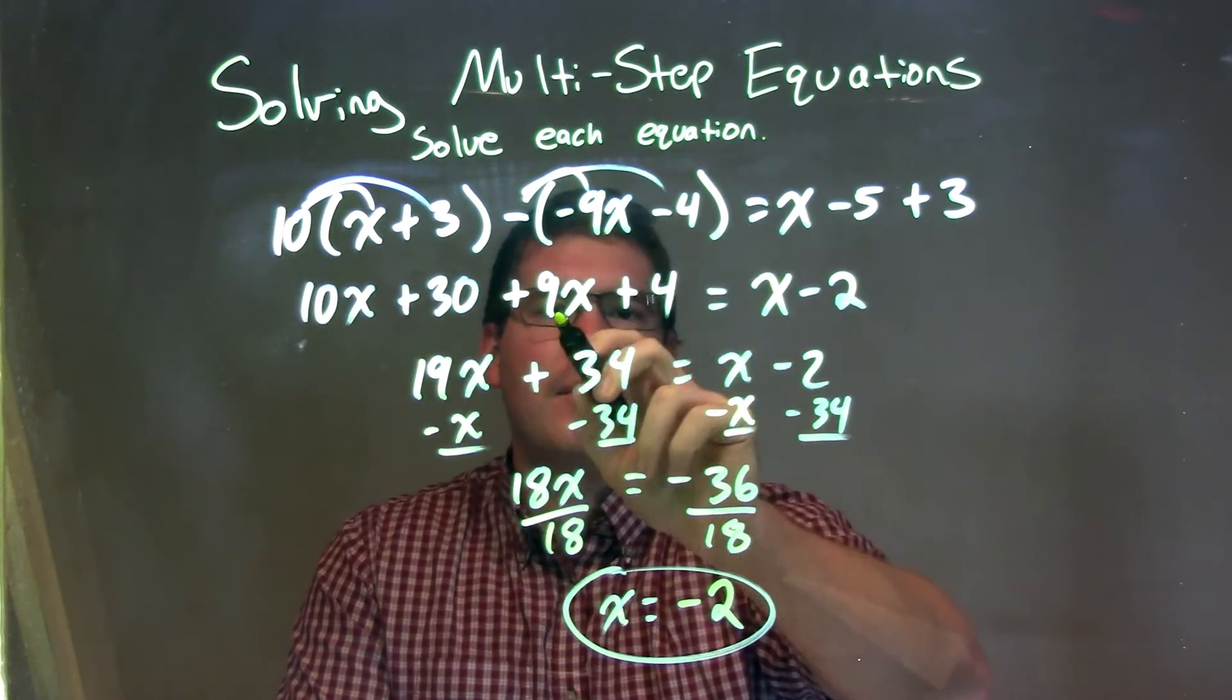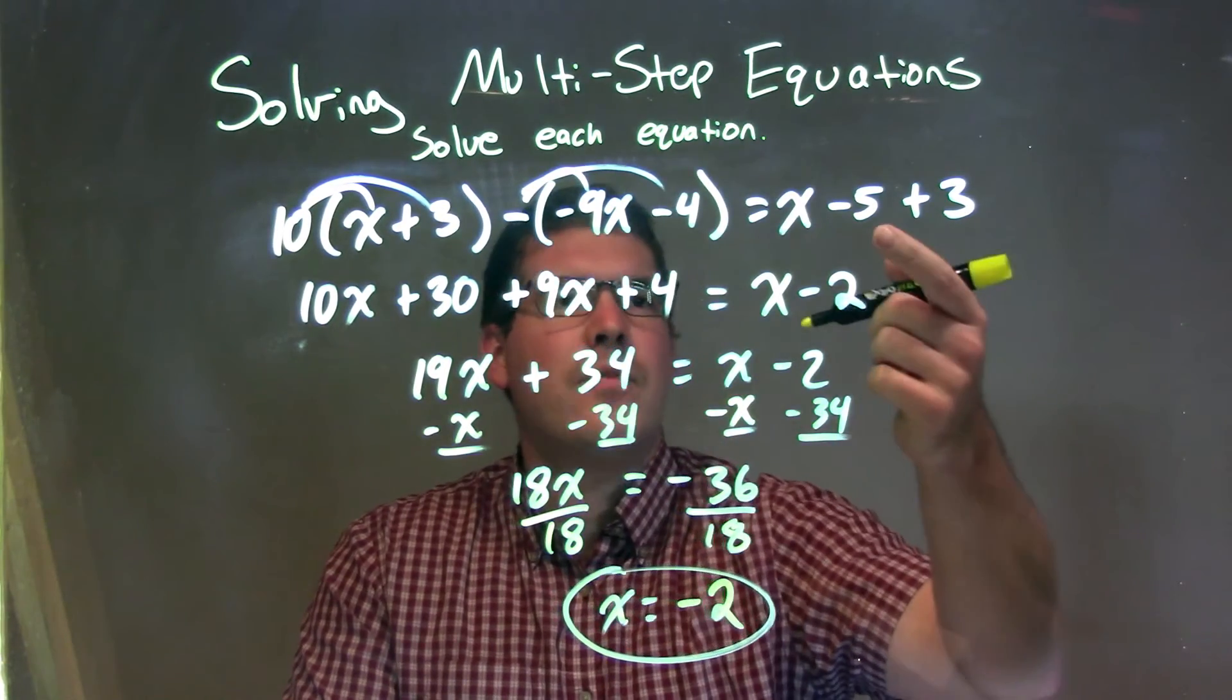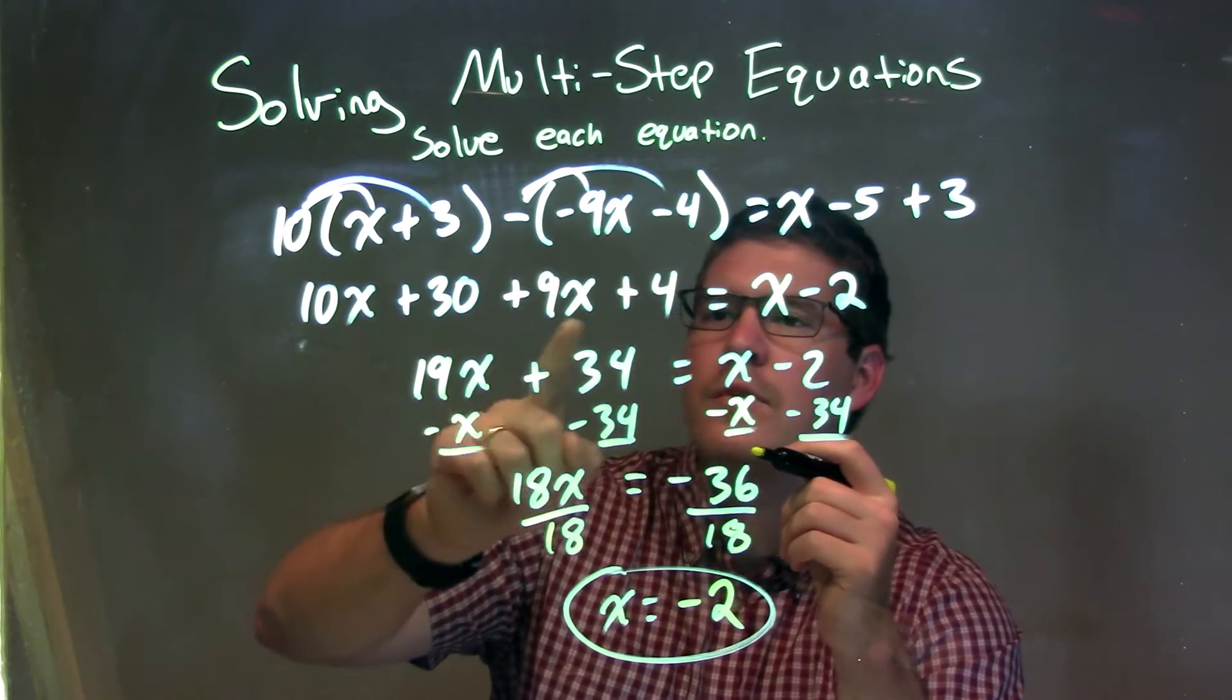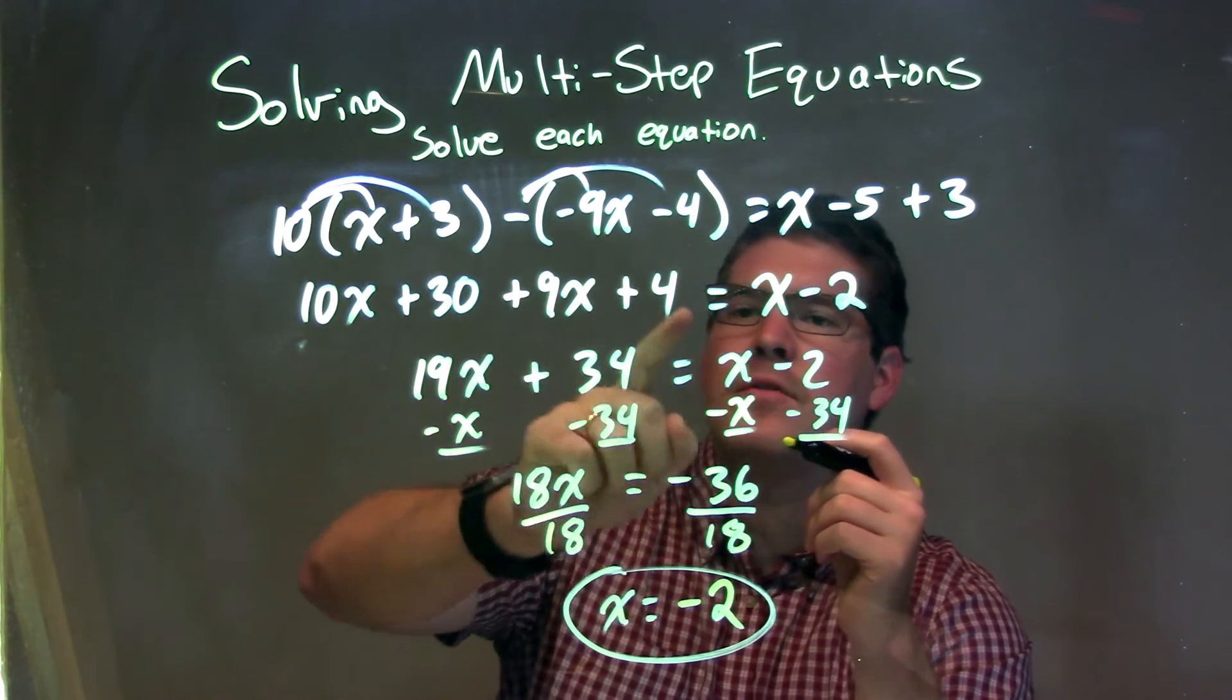Then I distributed the minus sign across, giving 9x plus 4. I simplified negative 5 plus 3 to be negative 2. Then I simplified 10x plus 9x to be 19x, and 30 plus 4 to be 34.